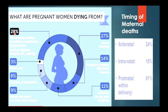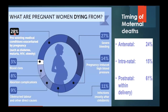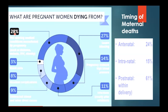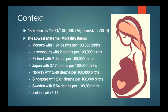What are women dying of? About 28% are dying because they have a pre-existing condition like diabetes. Almost as many are dying from severe bleeding — from postpartum hemorrhage — and from pregnancy-induced hypertension and infections. The timing of deaths is interesting: about a quarter die before labor starts, 15% die during the intranatal period, and 60% die postnatally, most within the first day. Although you can have eclampsia up to six weeks after delivering.